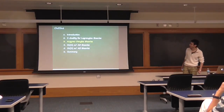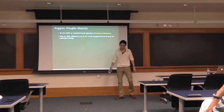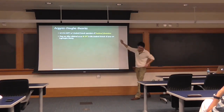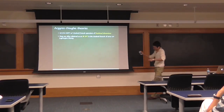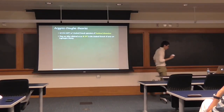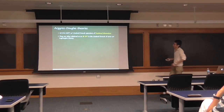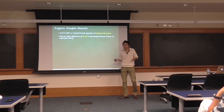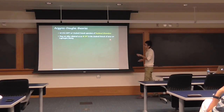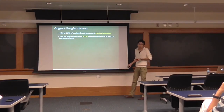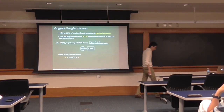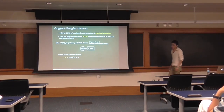Let me review what is the Argyres-Douglas theory — the second ingredient of my talk. These are a class of 4D N=2 superconformal theories with Coulomb branch operators of fractional dimensions. Usually they don't have Lagrangian descriptions, but often they are obtained as IR CFTs of some Lagrangian theory. You start with a Lagrangian theory, flow along the RG flow, and at the end you get the Argyres-Douglas theory as the IRCFT. Today, I'm going to start with SU(2) gauge theory with three flavors with N=2 supersymmetry.